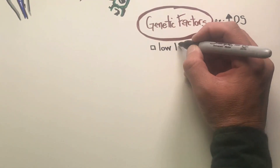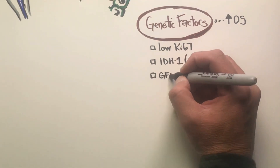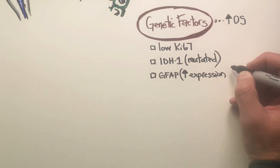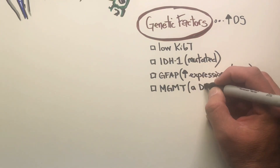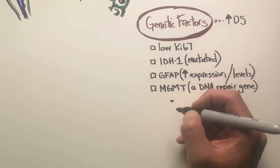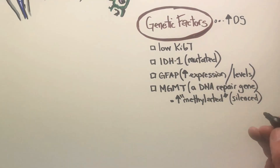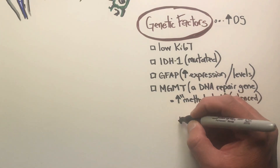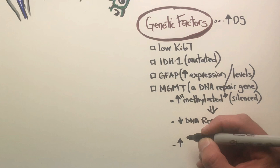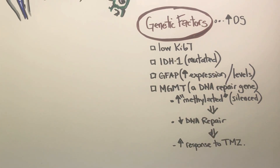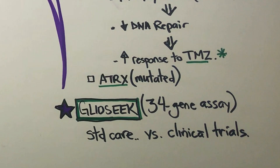From your pathology report, these are important pieces from your surgical pathology — genetic factors that indicate an increased response rate to standard care. A low Ki-67, IDH1, and GFAP show increased response rates when present, mutated, and overexpressed. MGMT is a key one for standard chemotherapy temozolamide. When it is hypermethylated, the MGMT gene — a DNA repair gene — has less activity, and we get greater response to temozolamide. ATRX also shows increased response rates to standard care.